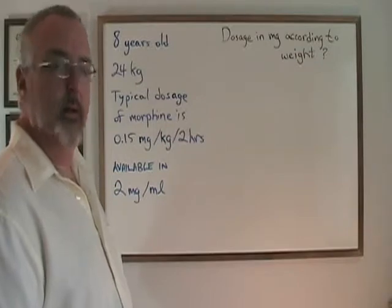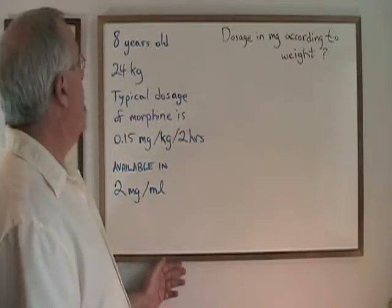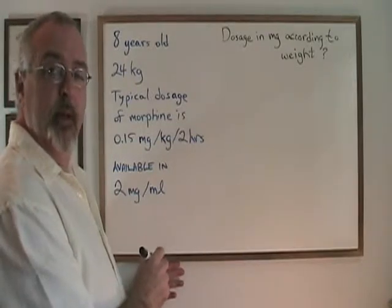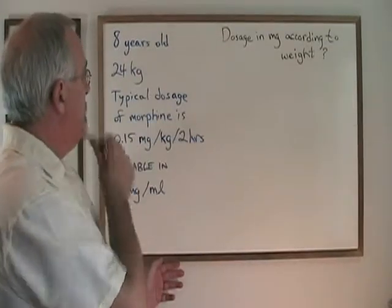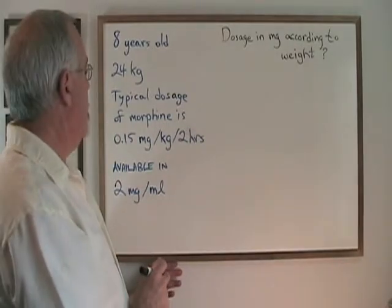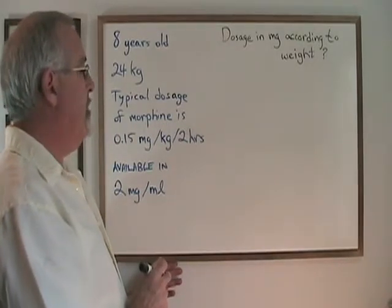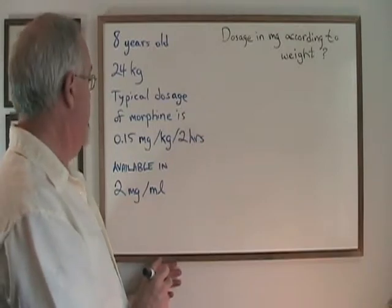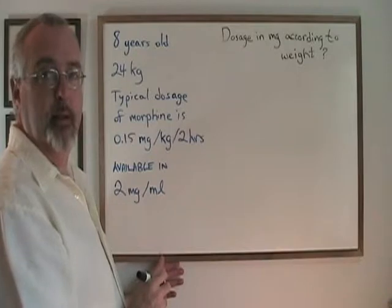When calculating a dosage in a pediatric case, we have to correct for the weight of the patient. In this example, we have an eight-year-old who weighs 24 kilograms. The typical dosage of morphine is 0.15 milligrams per kilogram every two hours, but it is available in 2 milligrams per milliliter.